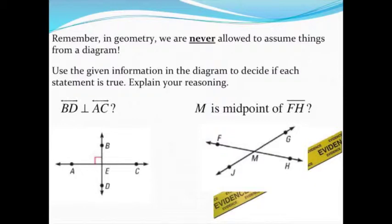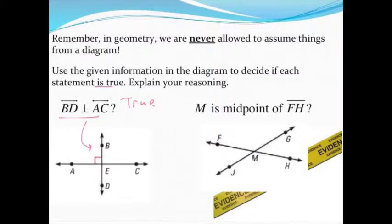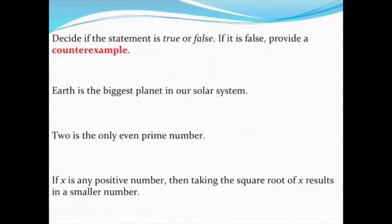A big rule in geometry is that we're never allowed to assume anything from a diagram. The statement 'line VD is perpendicular to line AC' is true — I can see the right angle symbol in the diagram, so nothing needs to be assumed. Compare that to 'M is the midpoint of segment FH' — while M looks like it might be the midpoint, nothing in the diagram confirms it, so I cannot assume it. I'd need tick marks or lengths to prove it; without that, it's a false statement.